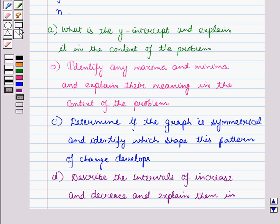Now, part A is: what is the y-intercept and explain it in the context of the problem. Part B is: identify any maxima and minima and explain their meaning in the context of the problem.